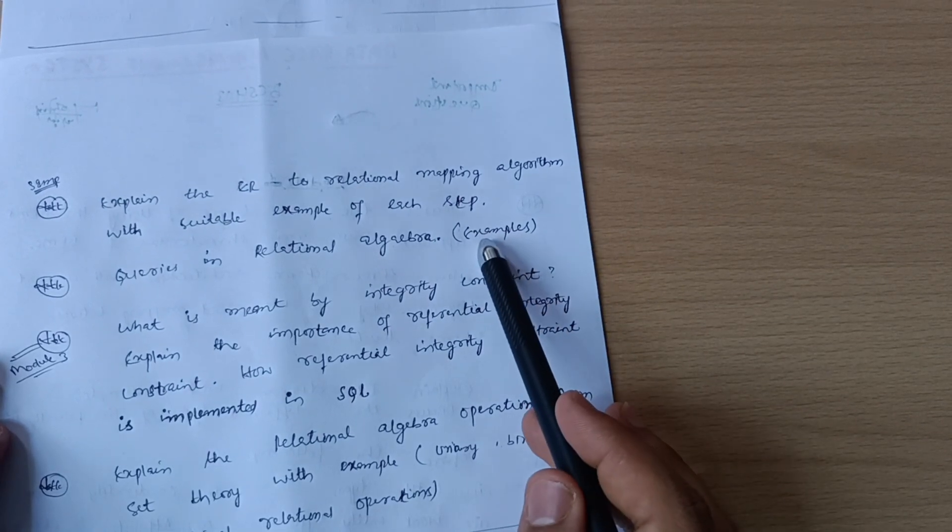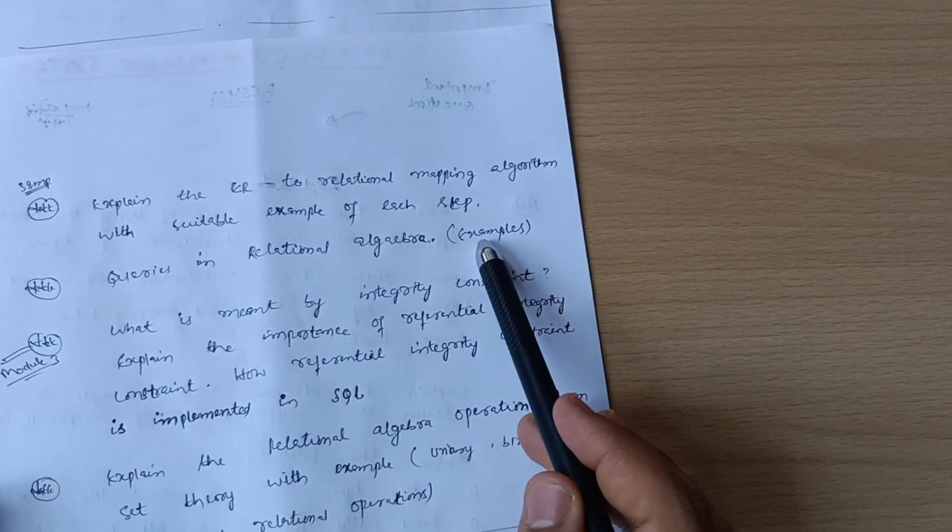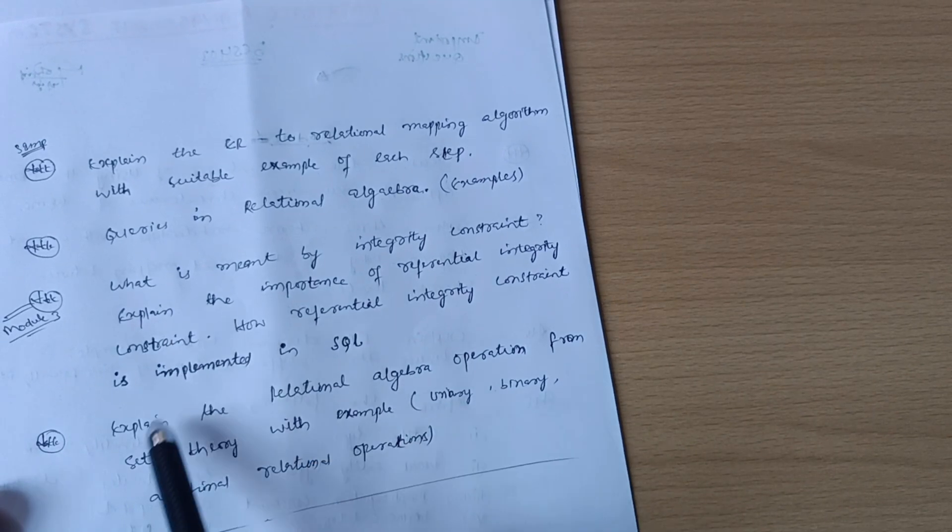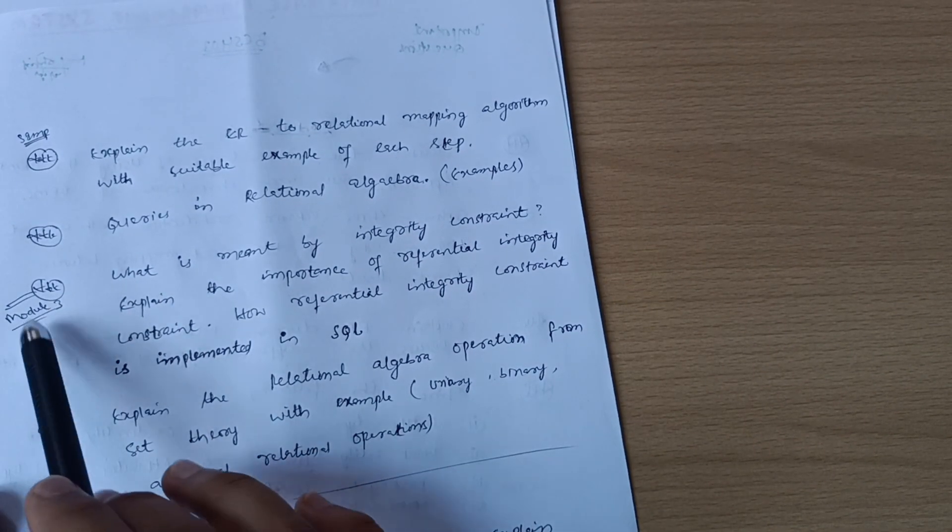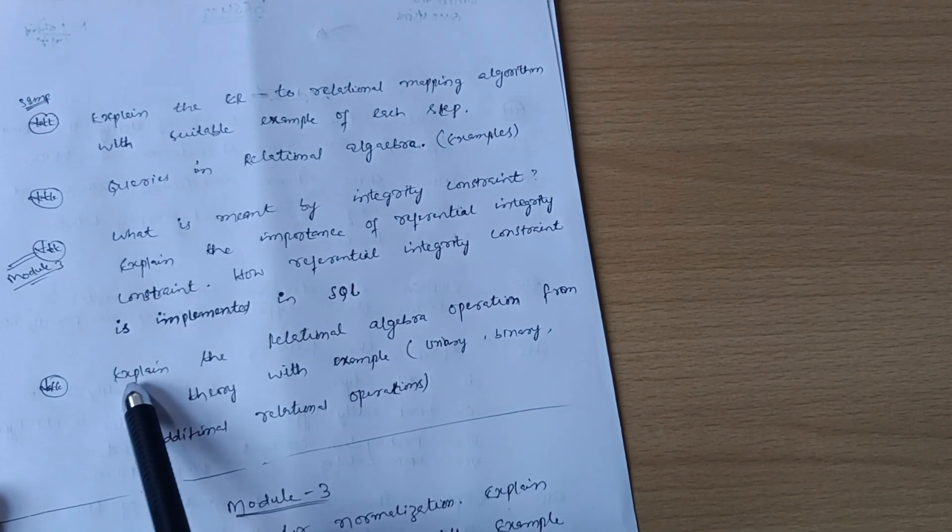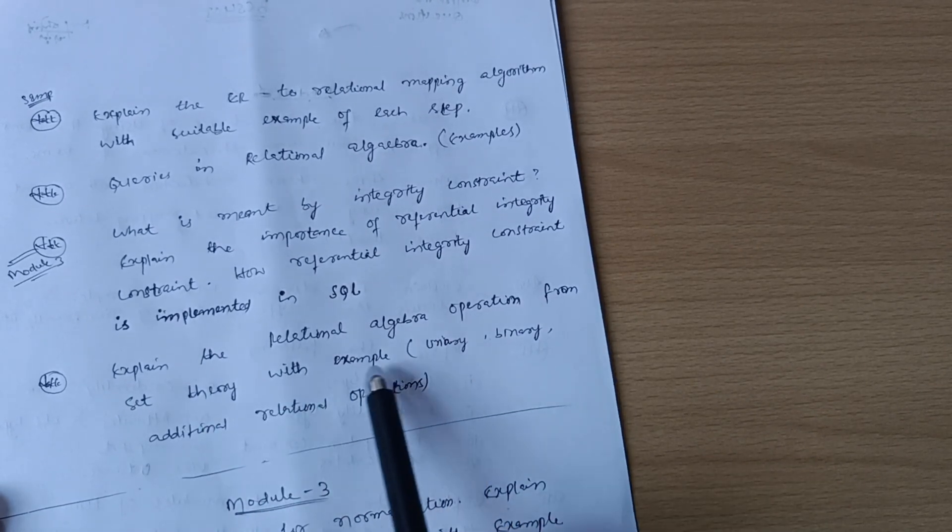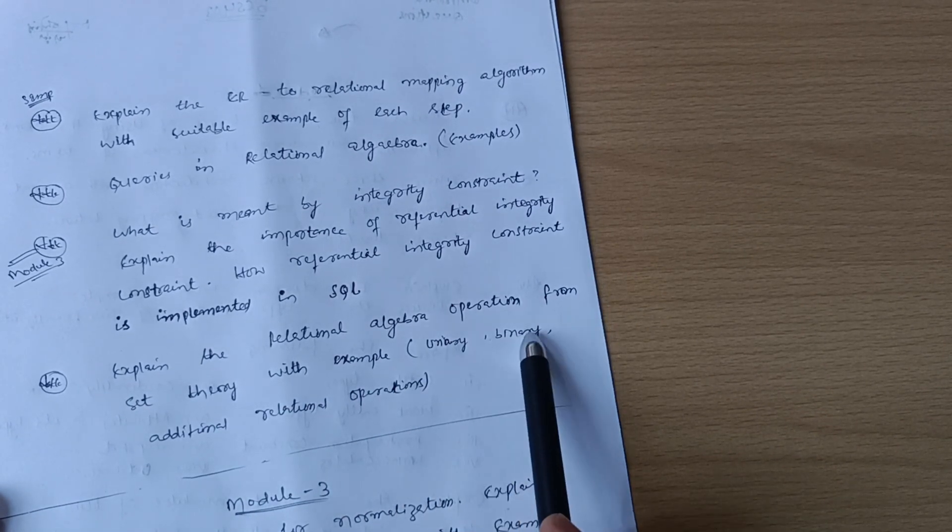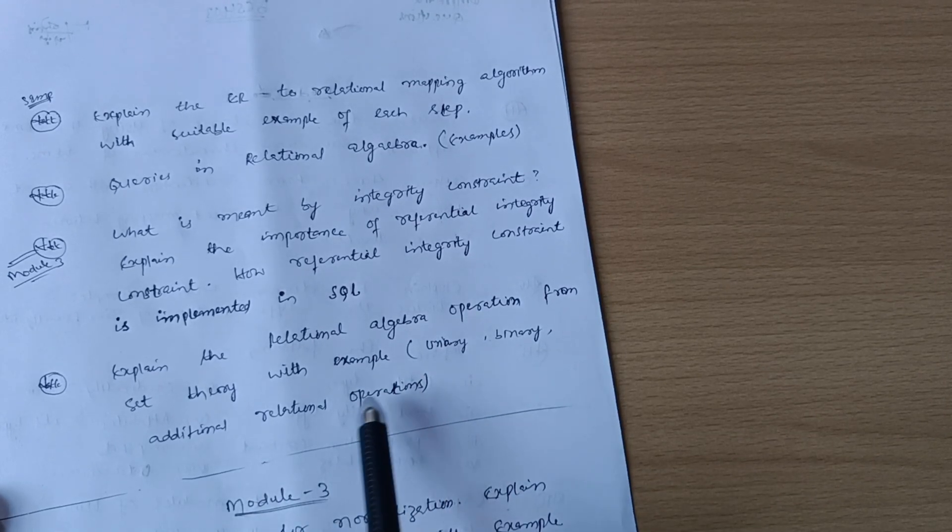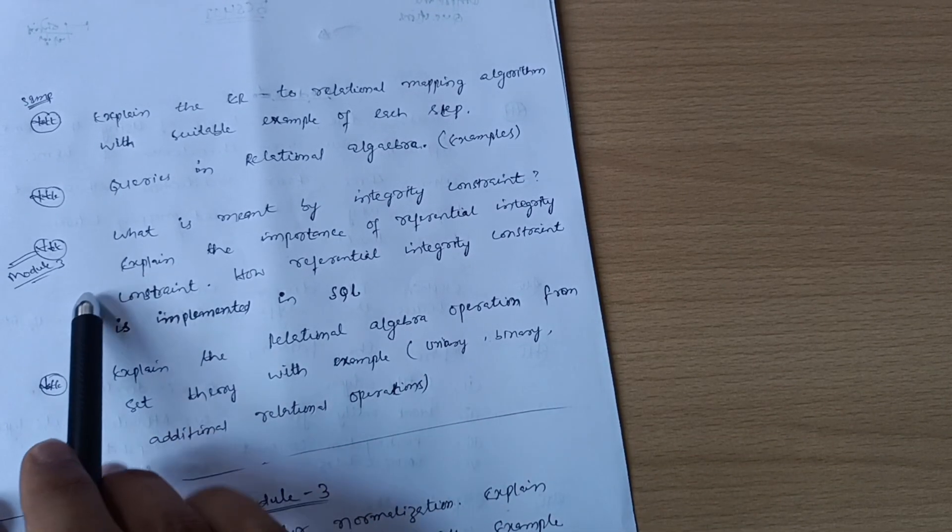This question is from Model 3, which I'll discuss later. Next question from Model 2: Explain the relational algebra operations from set theory with examples, like binary and additional relational operations. This is all about Model 2.